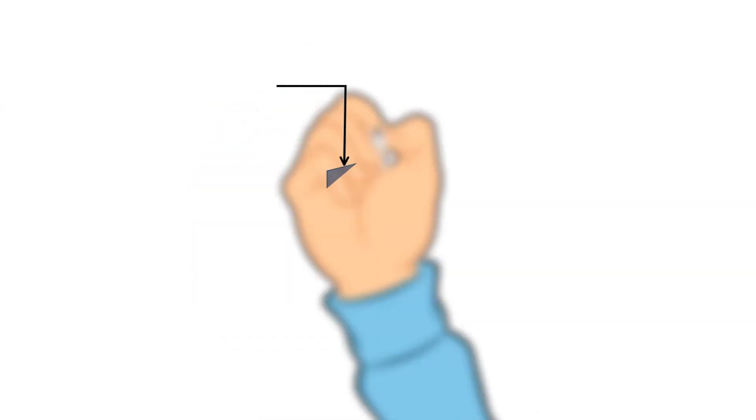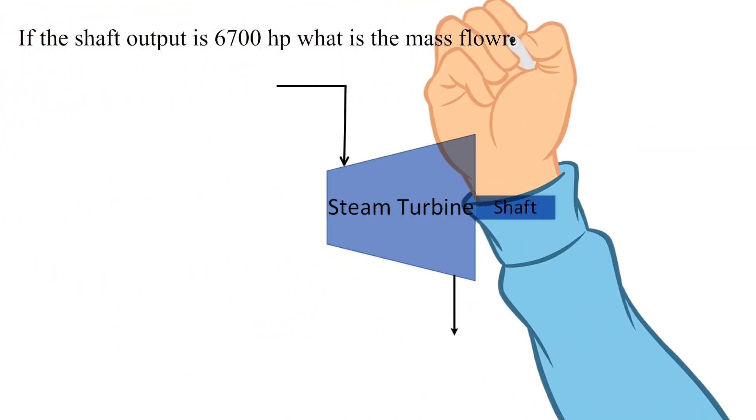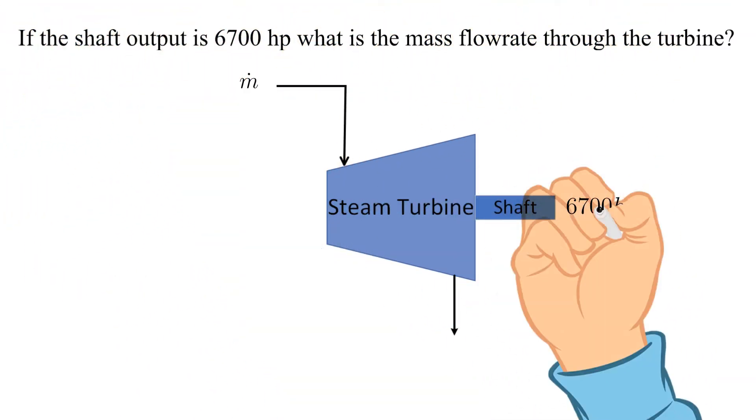Now let's proceed to the second part of this example problem. If the shaft output is 6700 horsepower, what is the steam mass flow rate through the turbine?